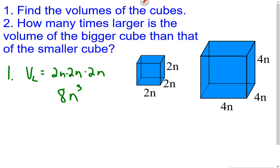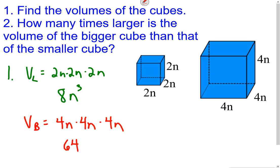Now let's find the volume of the big one. The area of the base is 4n times 4n, and then we multiply by the height of 4n. 4 times 4 times 4 is 64, and n times n times n is n to the third. So we found the volumes of both cubes, and now we want to know how many times larger the volume of the bigger cube is than the smaller cube.